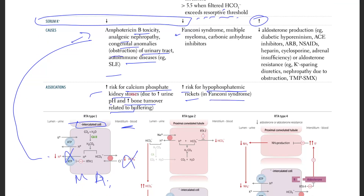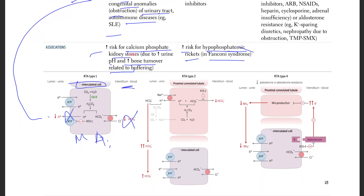Associations include increased risk of hypophosphatemic rickets, also seen in Fanconi syndrome. In RTA type 2, the key mechanism is that you cannot reabsorb bicarb in the PCT, causing metabolic acidosis.